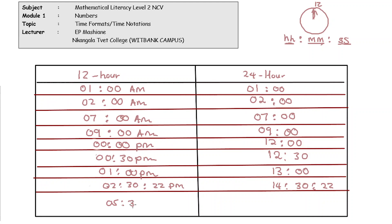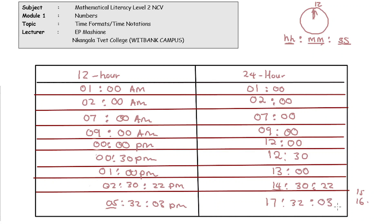If the 12-hour clock shows 05:32:03 PM, what time is it on the 24-hour clock? At 1 PM it's 13:00, 2 PM is 14:00, 3 PM is 15:00, 4 PM is 16:00, so 5 PM is 17:00 — giving us 17:32:03 on the 24-hour clock.